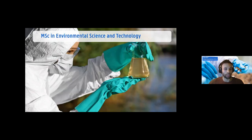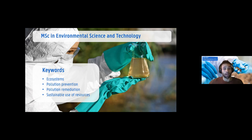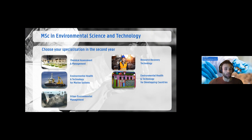The third master is the Master in Environmental Science and Technology — a broad, multi-disciplinary and solutions-oriented program addressing most environmental issues we face. You will learn to create a healthier living environment by preventing and remediating pollution. This program has five specializations in the second year: chemical assessment, resource recovery, urban pollution, environmental health technology for developing countries, and a specialization for marine systems.